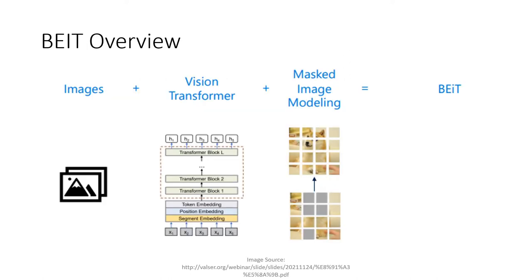Let's take a look at BEIT. BEIT consists of three main components: our data, which is our images; our model, which is our vision transformer; and our pre-training, which is our masked image modeling. The masked image modeling here is equivalent to omitting words, which we have seen in BERT in the previous slides.